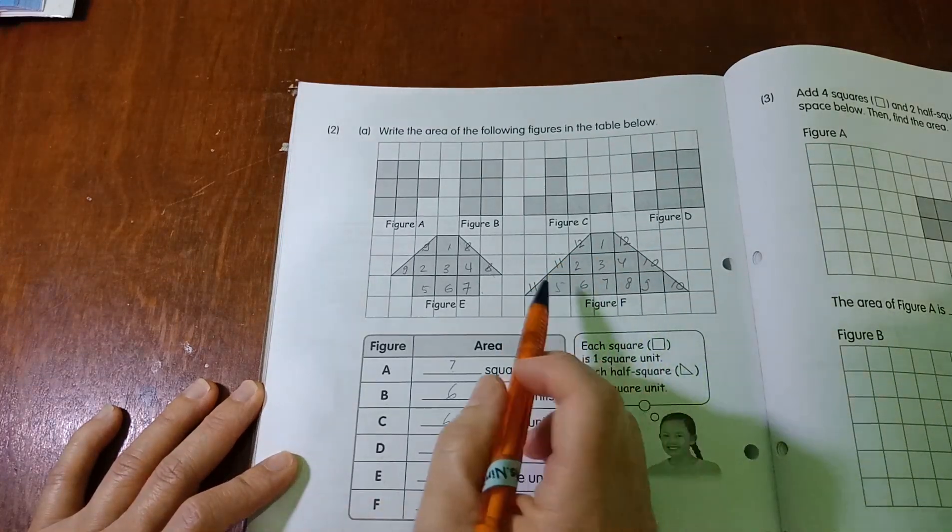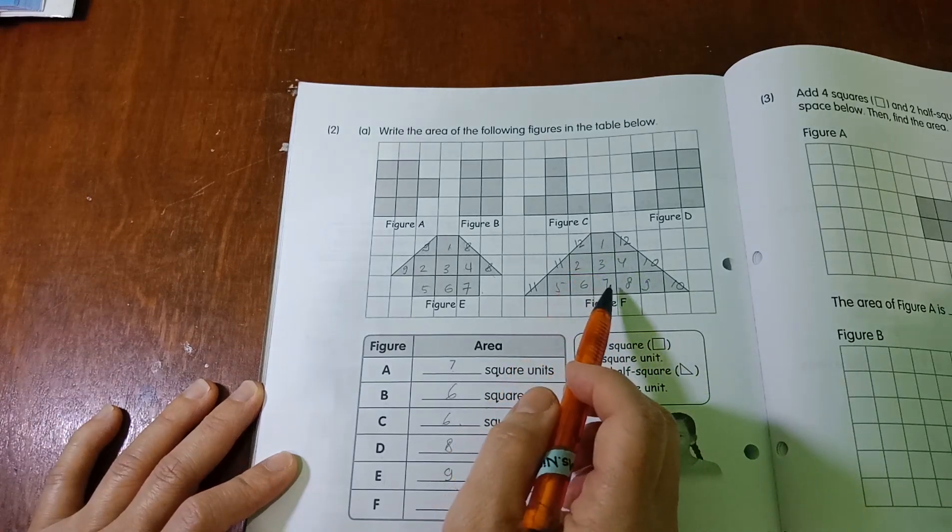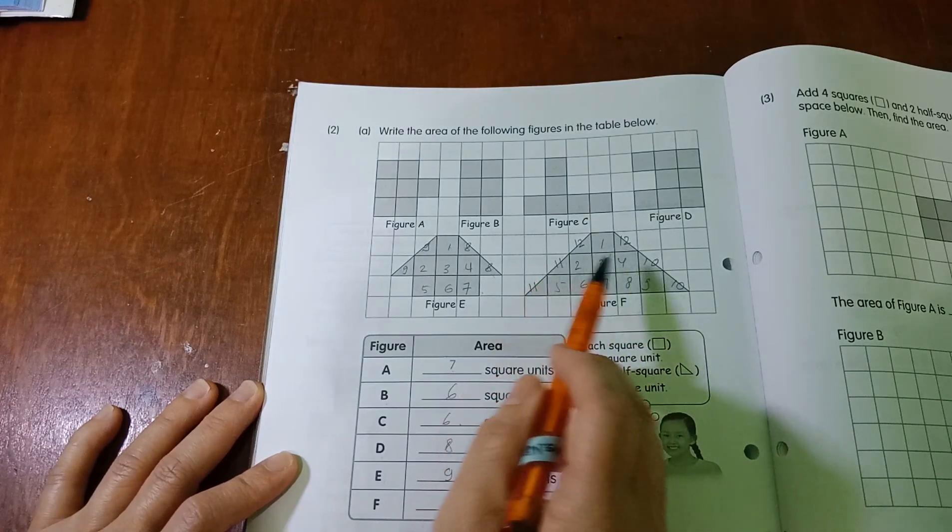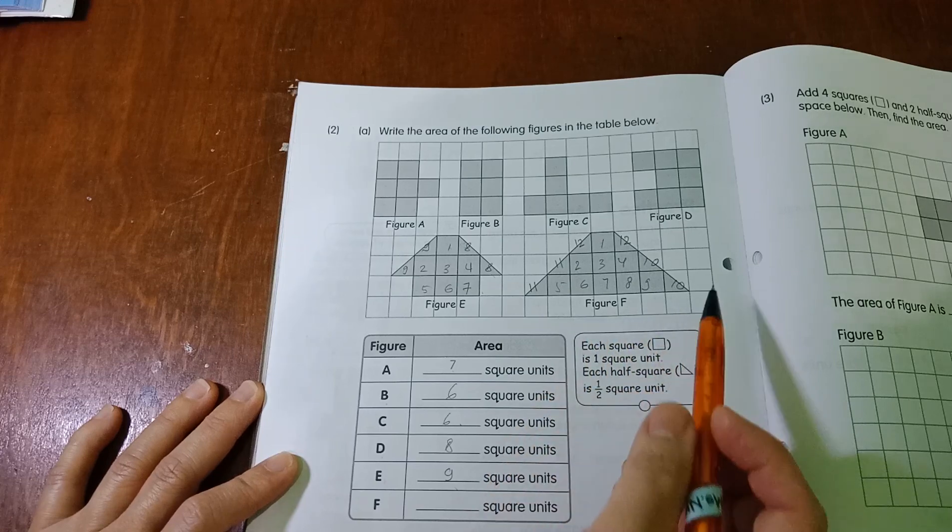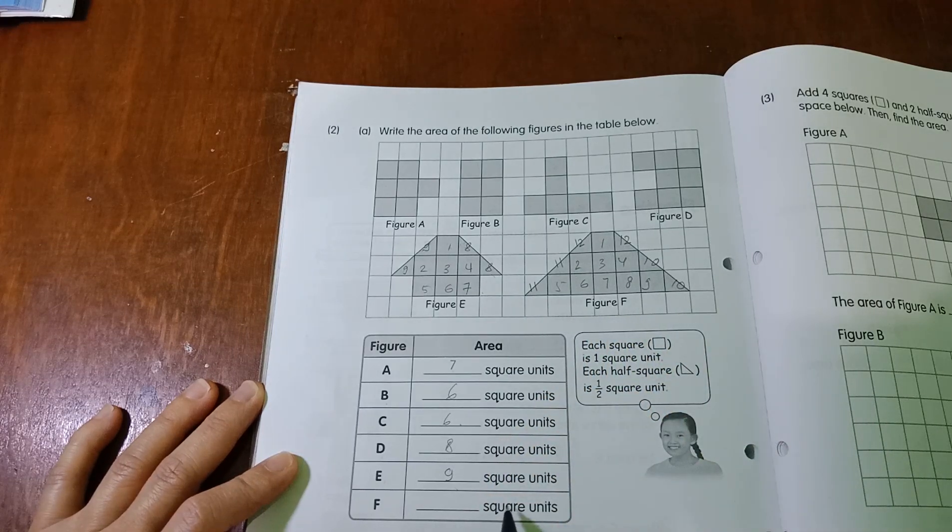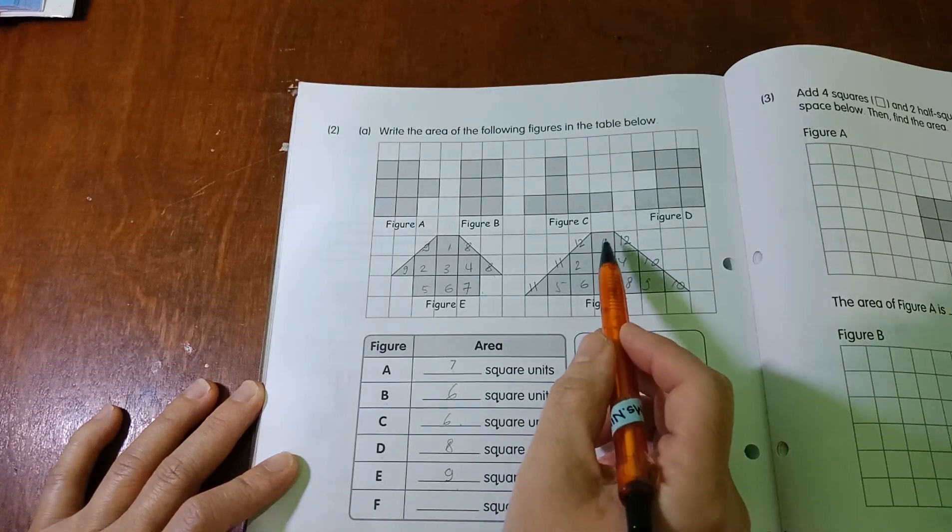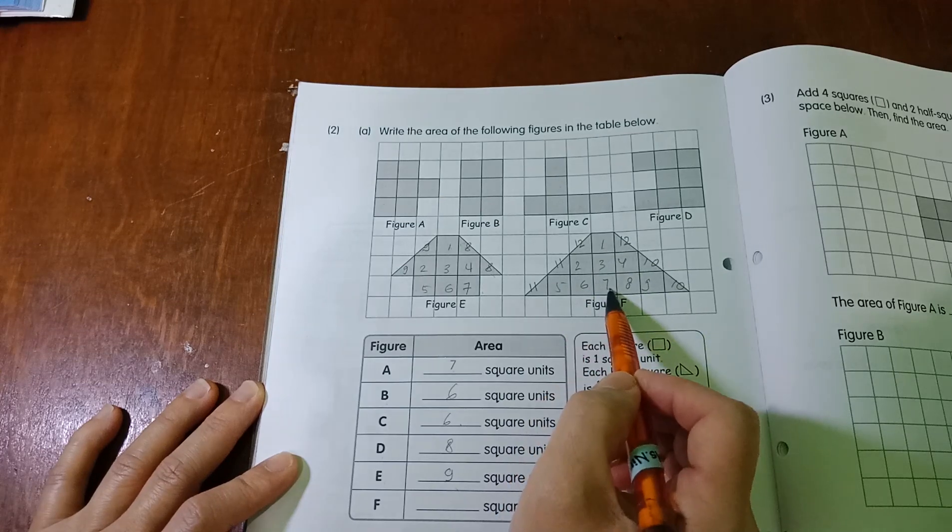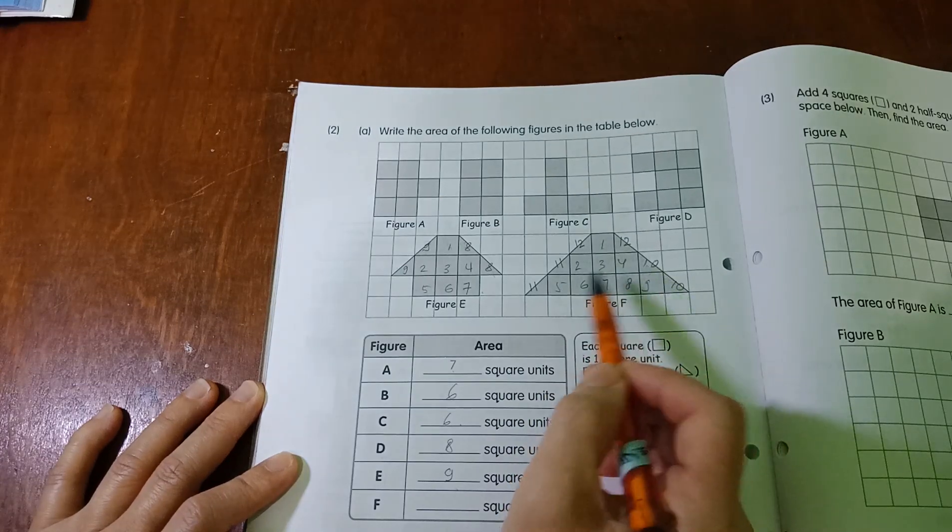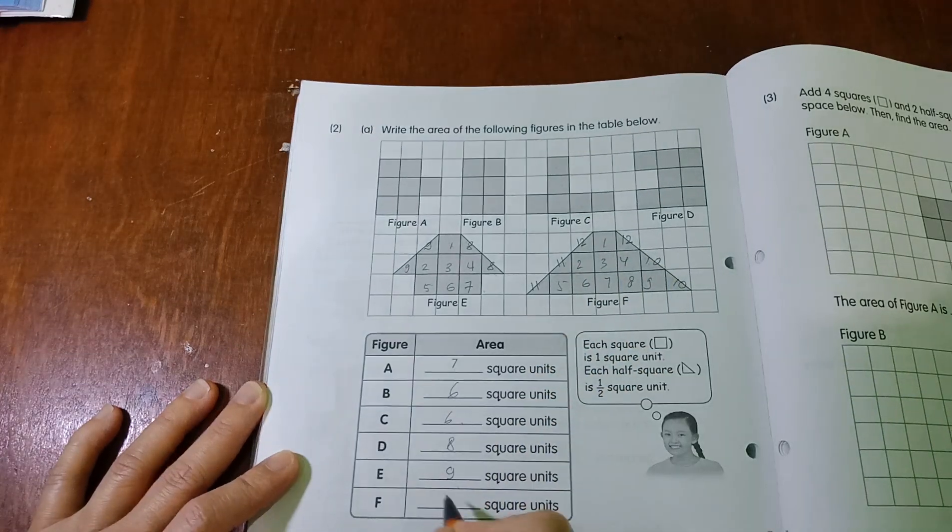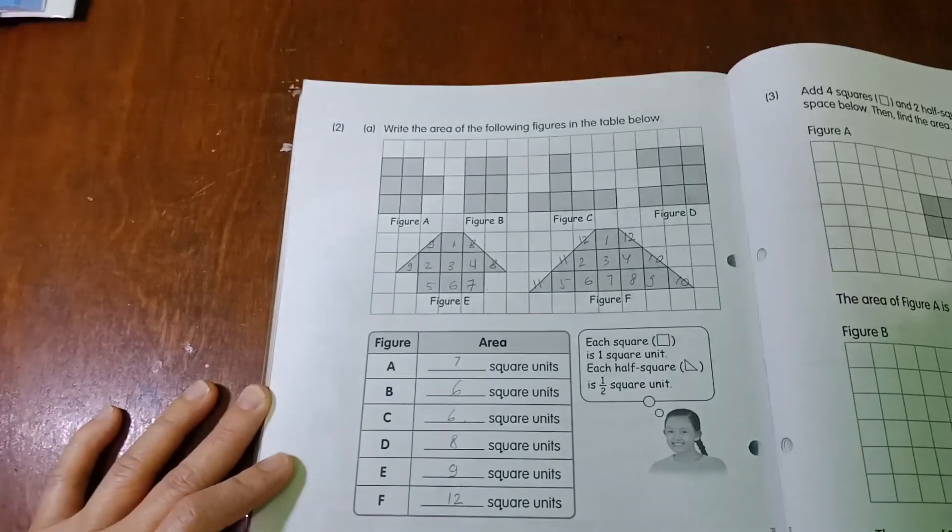I would suggest you to write the number here so you won't count it double. So now we count how many square units for figure F. 1, 2, 3, 4, 5, 6, 7, 8, 9, 10, 11, 12. So there are 12 square units.